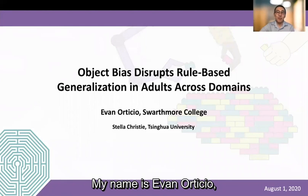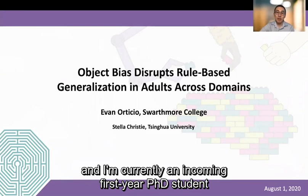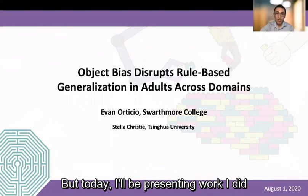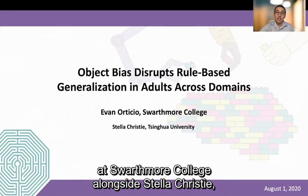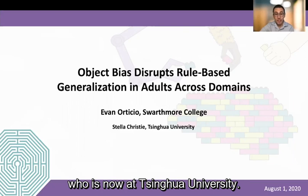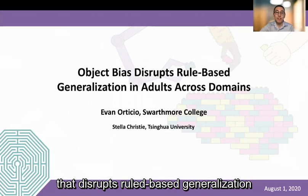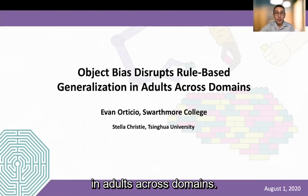Hi everyone, my name is Evan Ortizio and I'm currently an incoming first-year PhD student at UC Berkeley, but today I'll be presenting work I did at Swarthmore College alongside Stella Christie who is now at Tsinghua University, and the topic of the talk is an object bias that disrupts rule-based generalization in adults across domains.